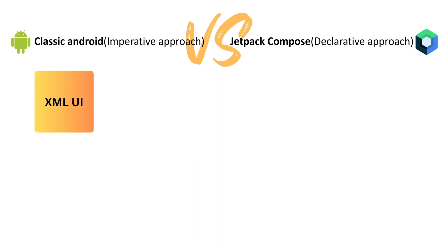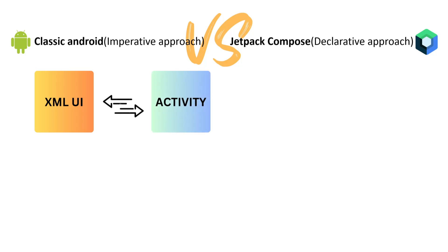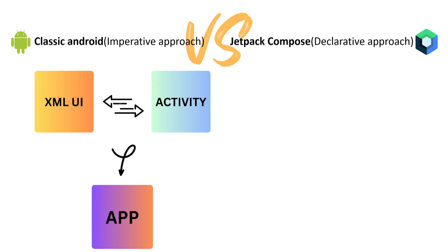In classical Android you need an XML UI and an Activity, and then you have to connect these two together. Through the interaction between these two you will have the app.